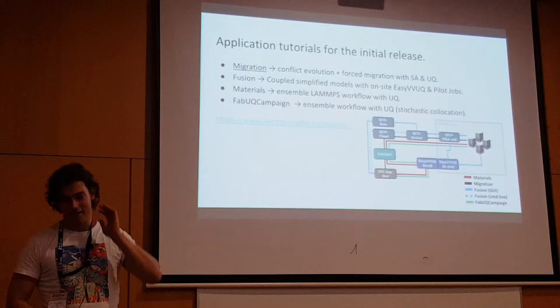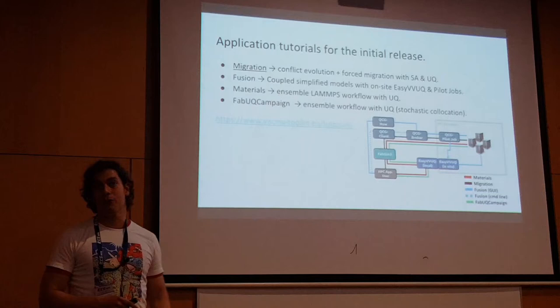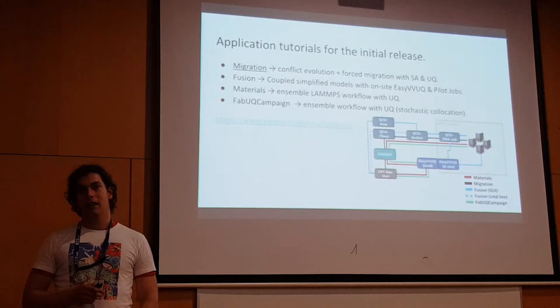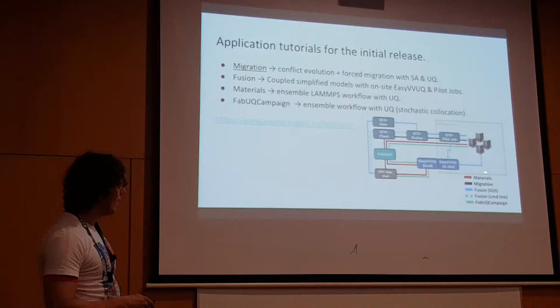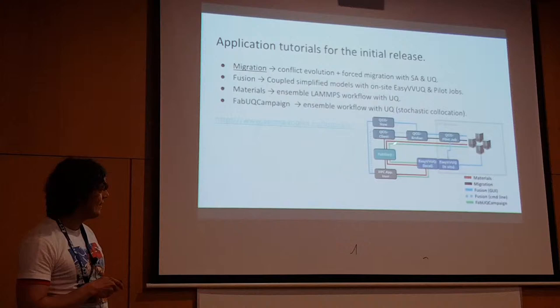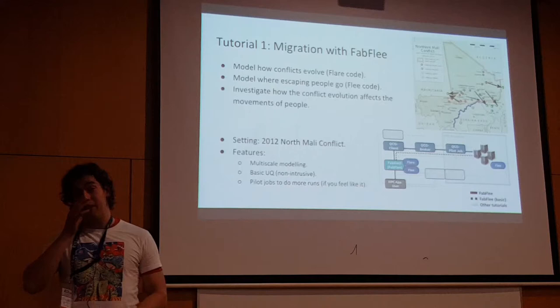So those are the five components of the toolkit, and as shown on the tube map you don't have to use all of them — you might choose to use only one or two. As part of the toolkit we also have four application tutorials, and three of them I'll briefly touch upon in this talk. The fourth one, Jalal will cover — the Fusion tutorial. The four tutorials correspond to colored lines: Materials, Migration, Fusion and FabUQ Campaign, which is heading towards a climate application. Every application has its own tube line and uses different components in different ways.